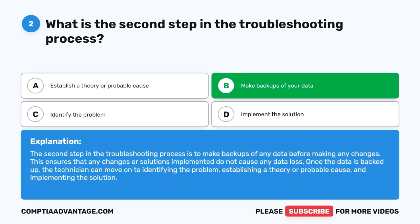The second step in the troubleshooting process is to make backups of any data before making any changes. This ensures that any changes or solutions implemented do not cause any data loss. Once the data is backed up, the technician can move on to identifying the problem, establishing a theory or probable cause, and implementing the solution.